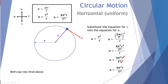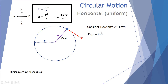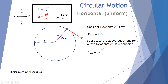We can find another set of equations using Newton's second law: F = ma. Since acceleration is a vector pointing towards the center, multiplying by mass means the net force also points towards the center. Substituting a = v²/r gives a new equation: F_net = mv²/r, also called centripetal force. Alternatively, substituting a = 4π²r/T² gives: F_net = m × 4π²r / T².